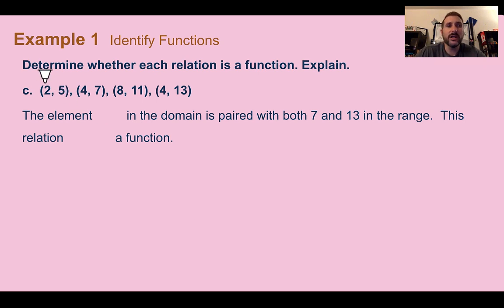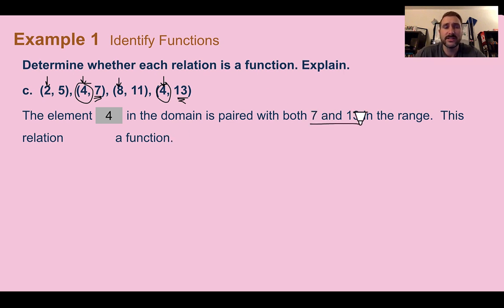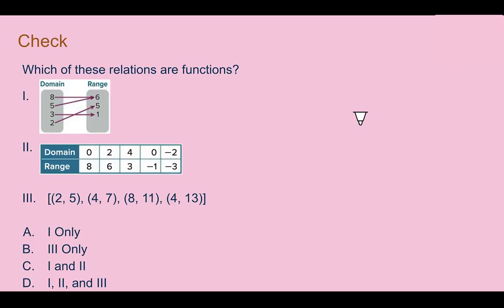For part c, we're given coordinates. Just like the table, we look at our x-values and find any duplicates. The value 4 shows up twice — the first time it went to 7, but the second time it went to 13. Because 4 went to two different things — 7 and 13 — this is not a function.